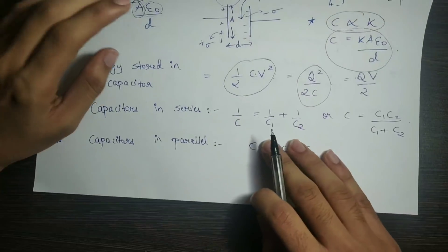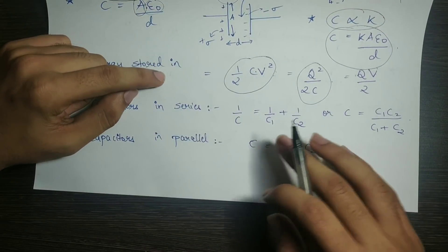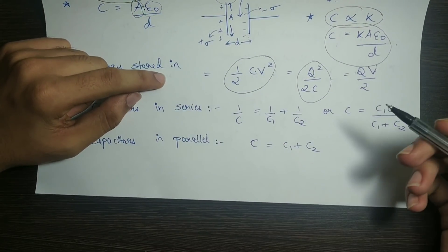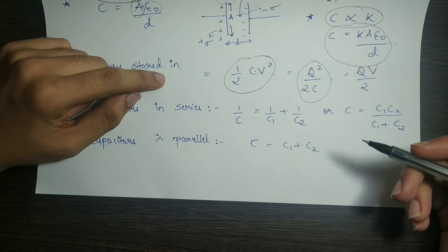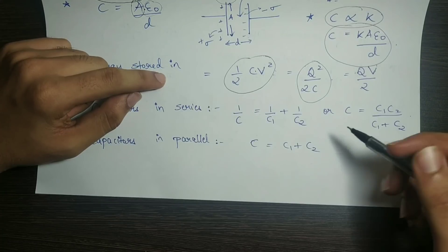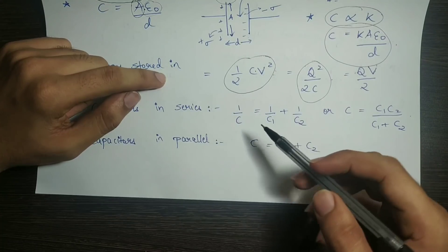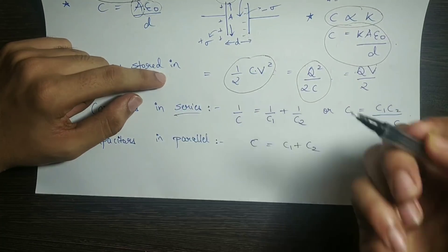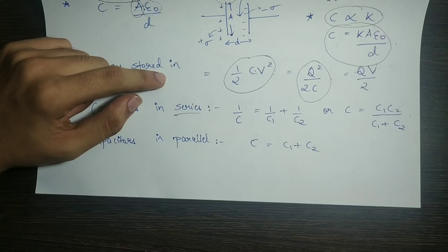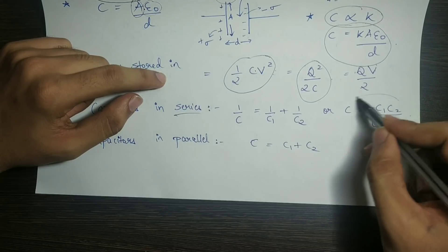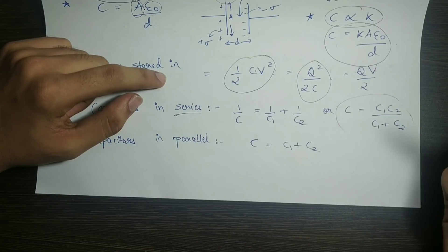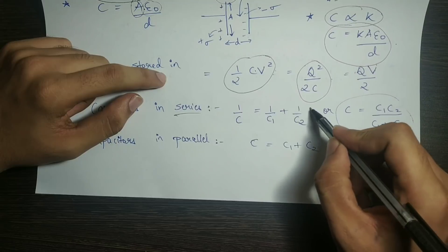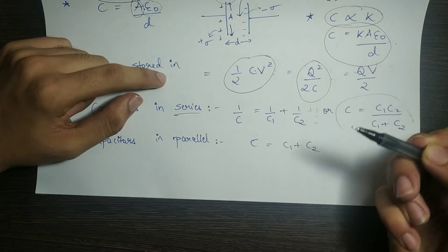For capacitors in series, similar to resistors in parallel, the formula is 1/C equals 1/C₁ plus 1/C₂, giving the total capacitance. After combining, the equivalent capacitance is 1/C₃.